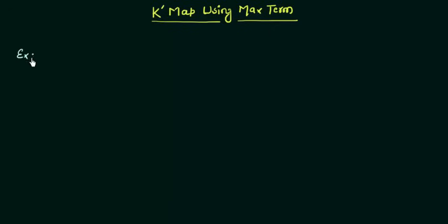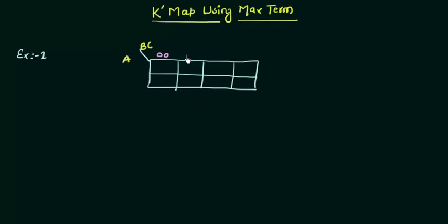So let me take the first example in this presentation. In this example, an 8-cell K-map is given to you and the variables are A, B, C. A is your max term, C is your min term. The entries are 0, 0, 0, 1, 1, 1, 1, 0, 0, 1.